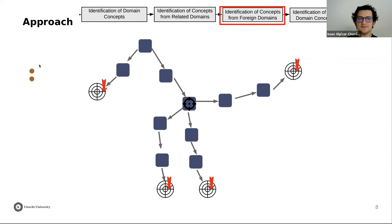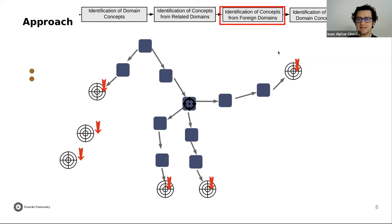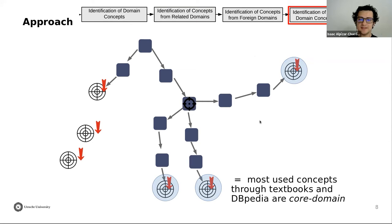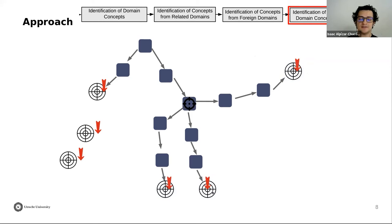In the third step, all remaining resources that were not classified are considered to belong to other domains not related to the target domain. In the last step, we take resources already classified as part of the domain, check the most-used concepts across textbooks and DBpedia, and consider those to be the core concepts in the domain, changing their label accordingly.